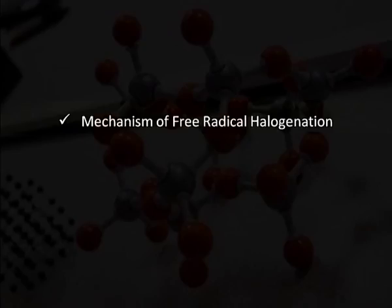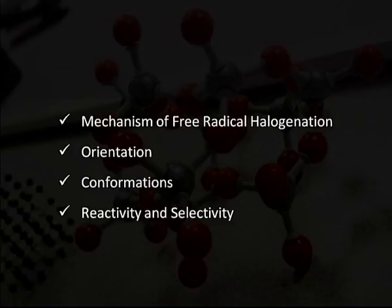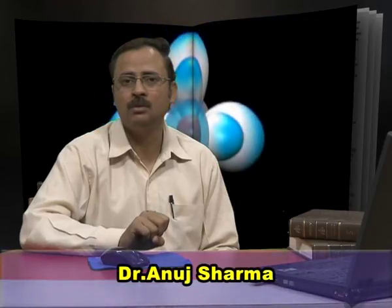In this episode, we have discussed the mechanism of free radical halogenation, orientation in alkanes, conformation of alkanes, and reactivity and selectivity regarding alkanes. In the next episode, we will discuss the properties of alkyl radicals.